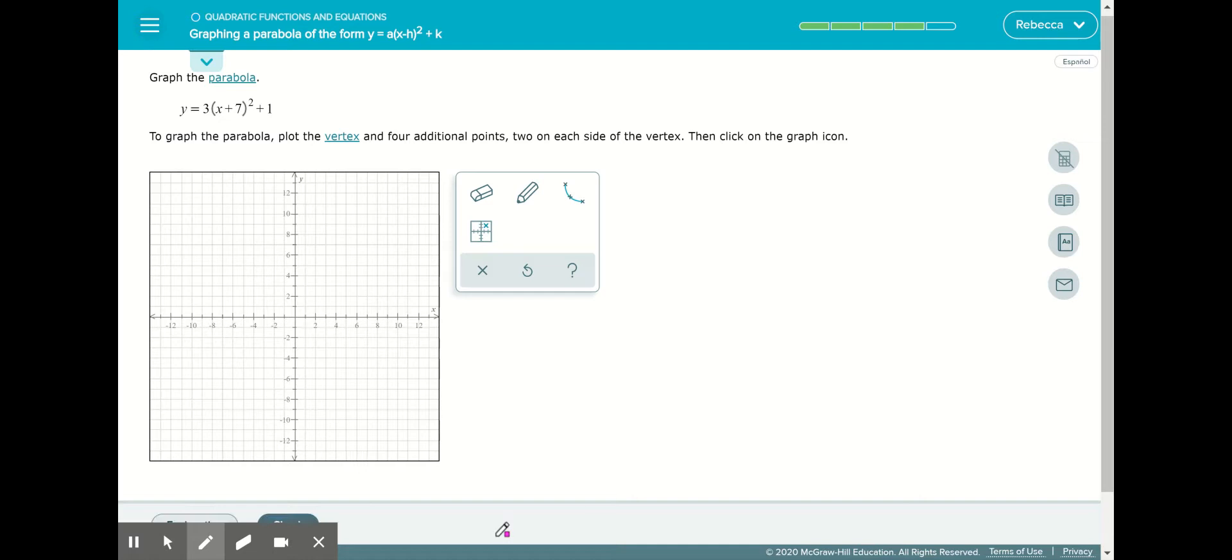Our next parabola we need to graph is 3 times the quantity of x plus 7 squared plus 1. Again, we want the vertex since it's in vertex form. I know that because it's got the parentheses squared and then a value at the end.